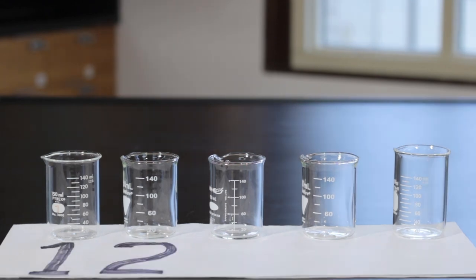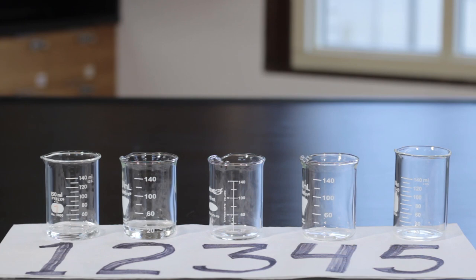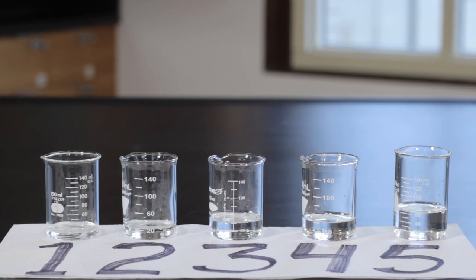Obtain 5 clean, dry beakers and label them 1 to 5. Using a clean, 10 mL volumetric pipette, measure out distilled water of 10 mL into beaker 1, 20 mL into beaker 2, 30 mL into beaker 3, 40 mL into beaker 4, 60 mL into beaker 5.